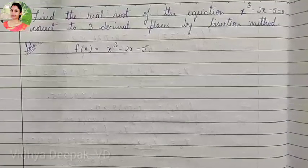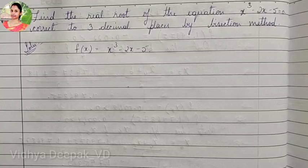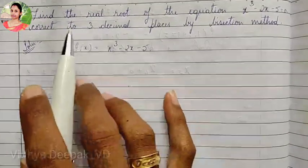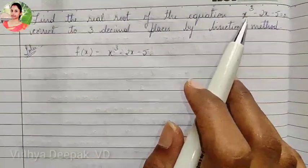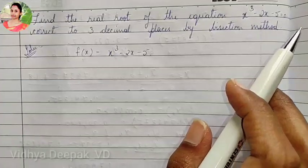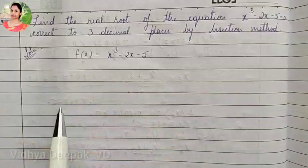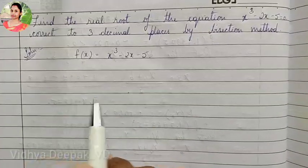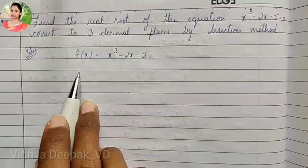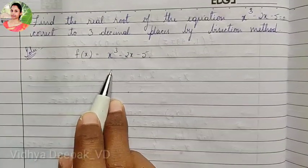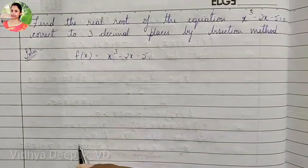Hello everyone. Today we are continuing with numerical analysis — the bisection method. So here we have a problem: find the real root of the equation x cube minus 2x minus 5 is equal to 0, and we have to correct the answer up to three decimal places using the bisection method. So our function is f of x equals x cube minus 2x minus 5.